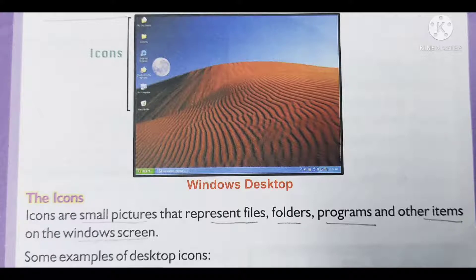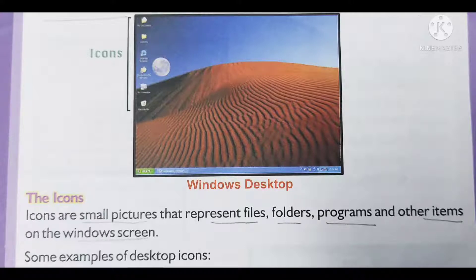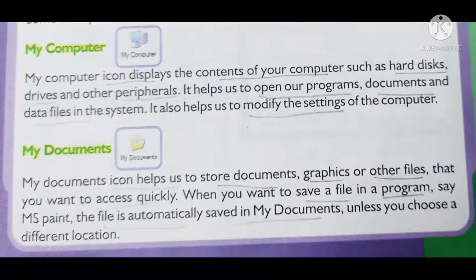Icons: An icon is a small picture that represents files, folders, programs, and other items on the Windows screen. For example, on the desktop we have My Computer, My Documents, and also Recycle Bin.